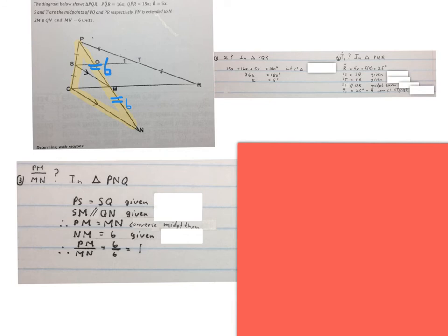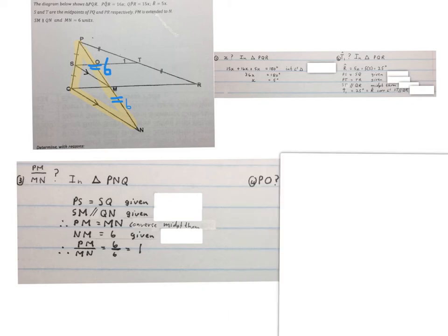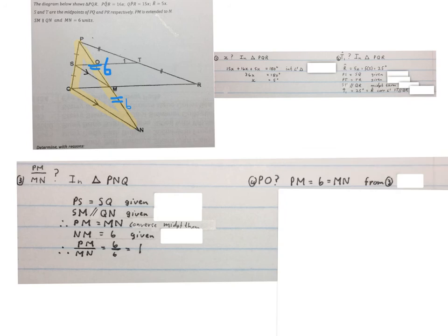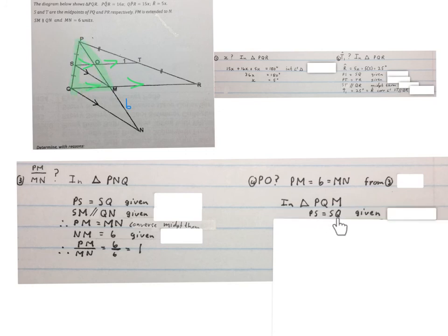The last thing we have to work out for this video is the length of PO, that is the length from P to O over there. First we can write PM equals 6 equals MN from question 3. Write in triangle PQM, the green triangle now.